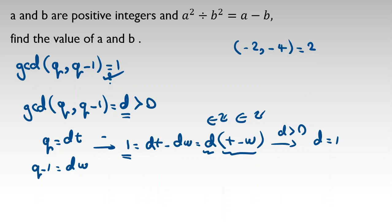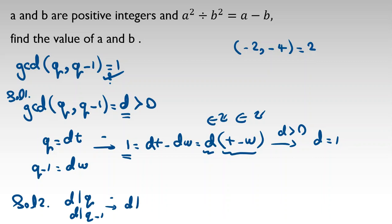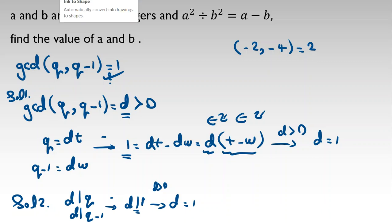Alternatively, using divisibility notation: d divides q and d divides q minus 1, so d divides their difference, which means d divides 1. Since d is positive, d must equal 1. Thanks for watching this video, have a good day, bye bye.